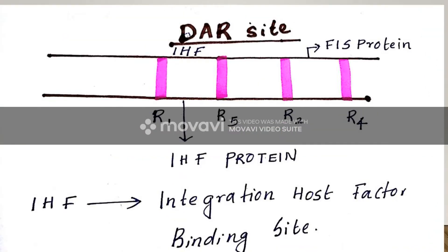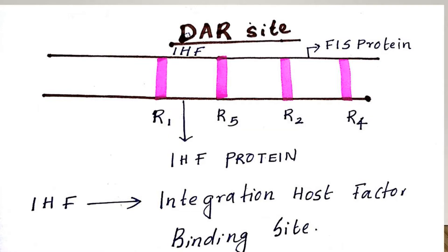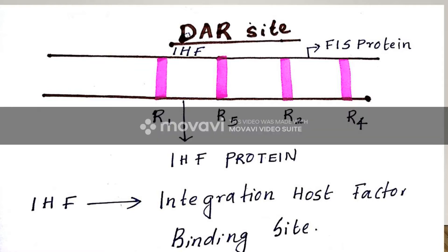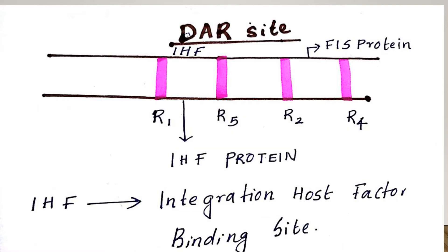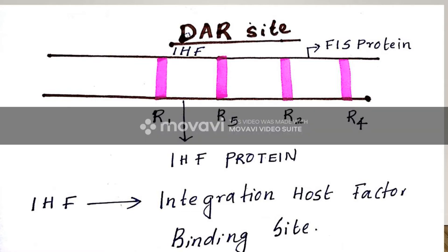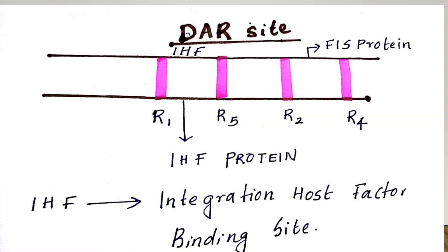Now we focus on the DAR side — the DNA Assembling Region — where the R1, R5, R2, and R4 boxes are present. In between R1 and R5, the IHF protein binds, and at R2 and R4, the FIS protein binds. IHF stands for Integration Host Factor.